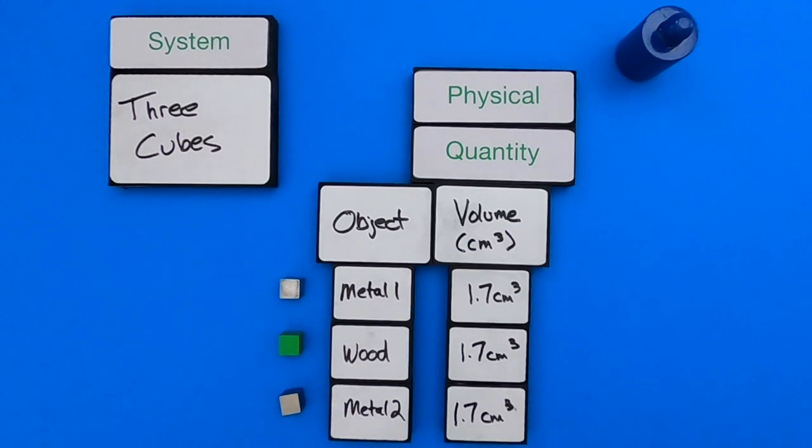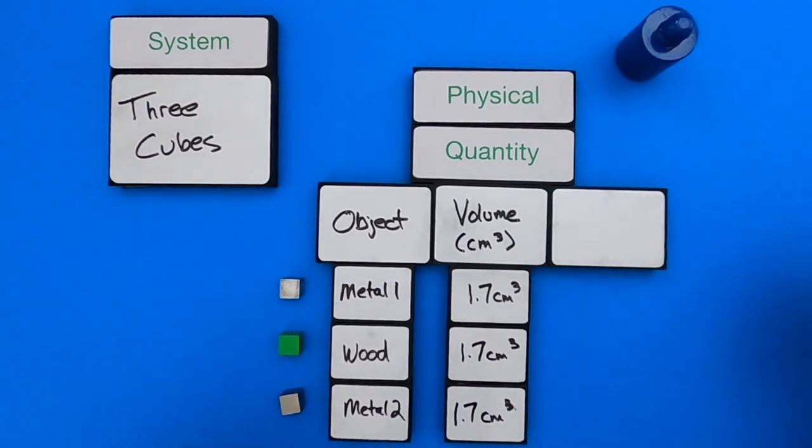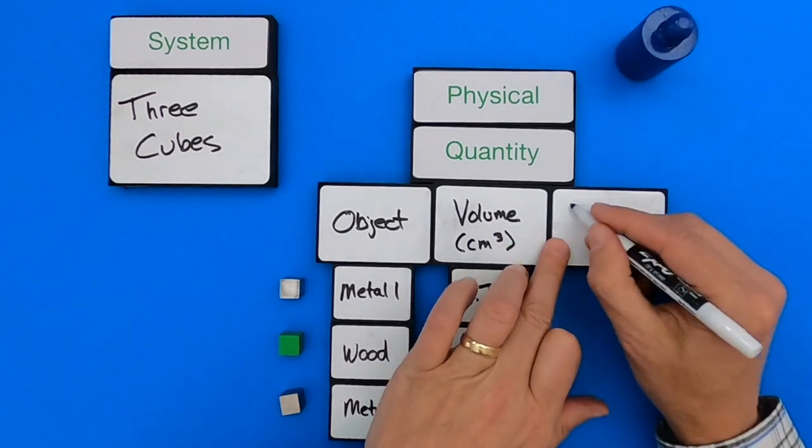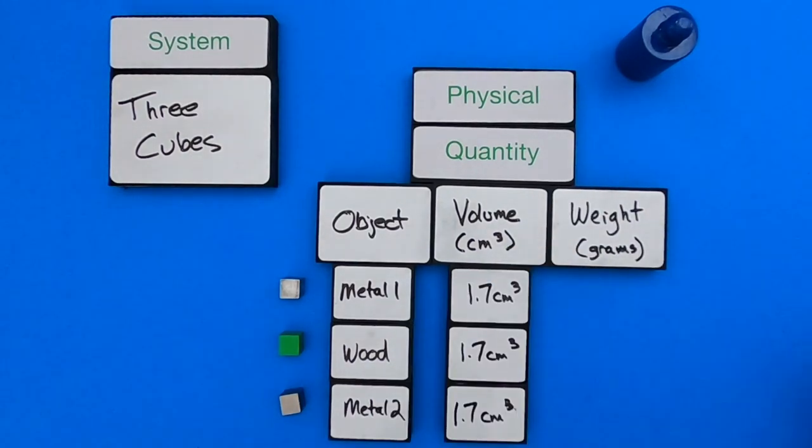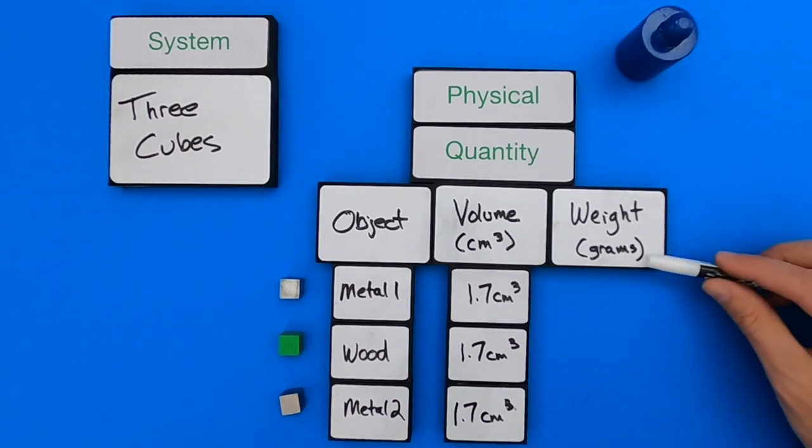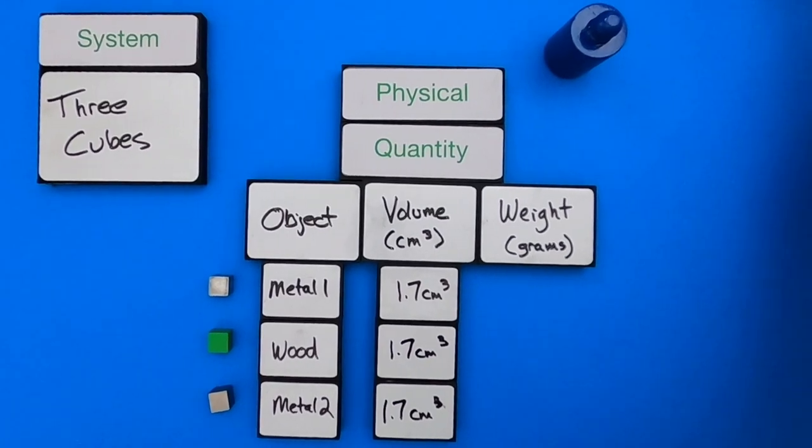And so the next thing I might do is figure out, well, they all seem similar when it comes to volume, but I wonder what their weights are. In other words, how many grams do they contain? So the physical quantity here is weight, or it could be measuring mass. And we're going to put that in grams. And so let me get a scale out, and we'll measure that.